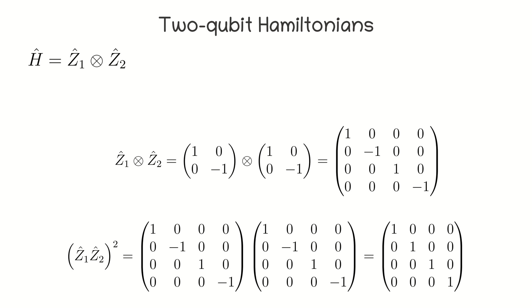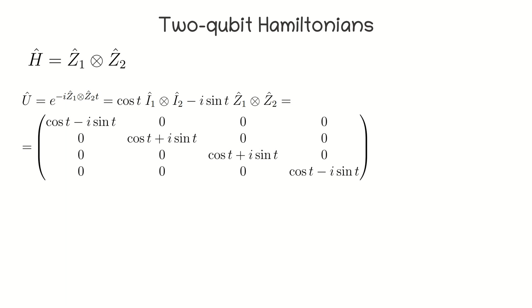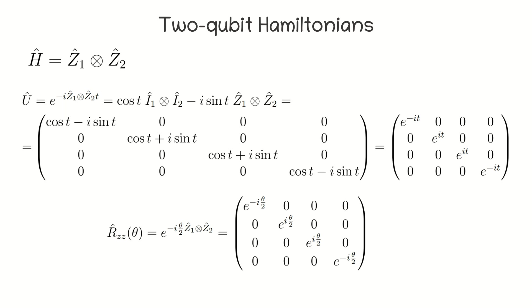Therefore, to calculate the evolution operator for a given Hamiltonian, we can use a formula for the decomposition of the matrix exponential. Now, we rewrite everything in matrix form and use a formula for the exponential notation of a complex number. Thus, we have obtained an operator which is referred to in the literature as Rzz and appears, for example, in the QAOA algorithm.